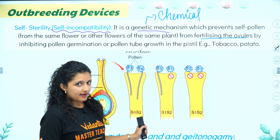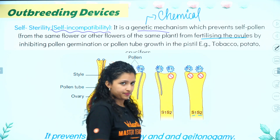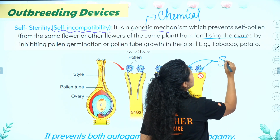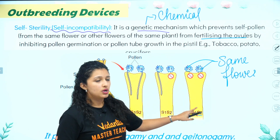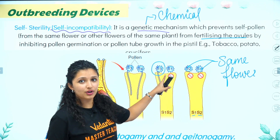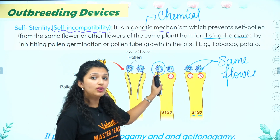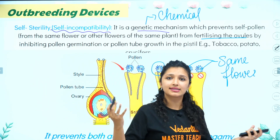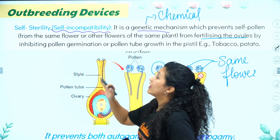Looking at the diagram, imagine a flower with S1 and S2 alleles. If the pollen also carries S1 and S2 — the same alleles as the gynoecium — the pollen tube will not be allowed to grow. But if the pollen comes from a different plant carrying S3, it will grow. So S1, S2 pollen on an S1, S2 flower will not be allowed — that is self-incompatibility.